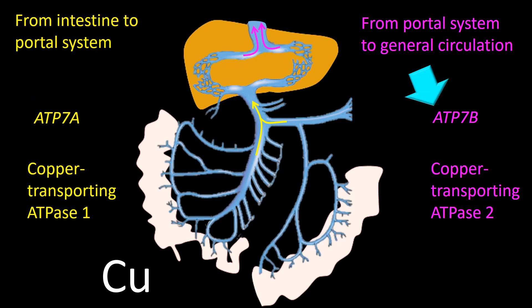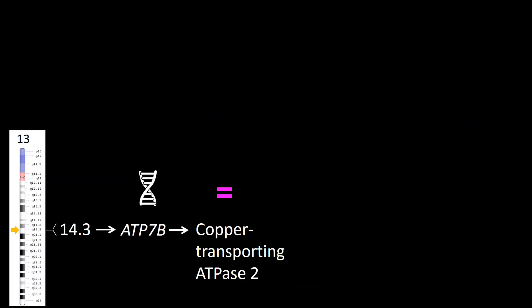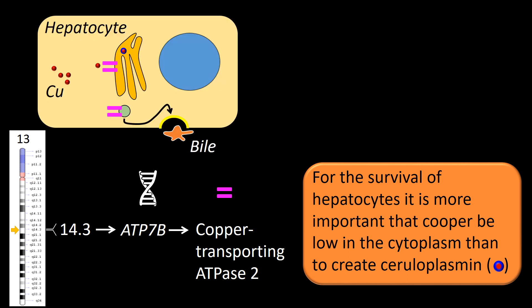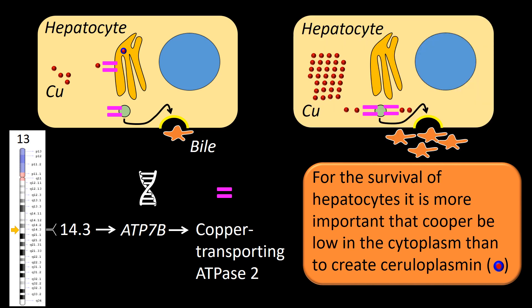Now the story of the ATP7B gene, located in chromosome 13 at locus Q14.3, present in the liver. In the hepatocyte it is used for production of many enzymes and also to form ceruloplasmin, the most important copper transporting protein in the body. When cytoplasmic copper is normal or low, copper transporting ATPase 2 is mostly in the Golgi apparatus, incorporating copper into a protein called ceruloplasmin. When copper in the hepatocyte is high, ATPase 2 moves to the apical side of the cell and helps excrete copper in the form of bile.